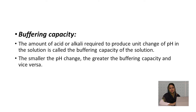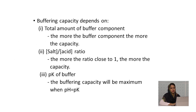Buffering capacity: the amount of acid or alkali required to produce a unit change of pH in a solution is called the buffering capacity of a solution. The smaller the pH change, the greater the buffering capacity, and vice versa. Buffering capacity depends on: the total amount of buffer components — more buffer component means more capacity; the salt-to-acid ratio — the closer the ratio is to 1, the greater the capacity; and the pK of the buffer — buffering capacity is maximum when pH equals pK.